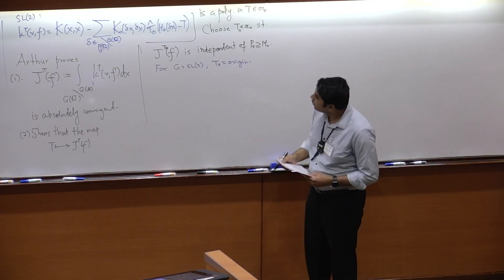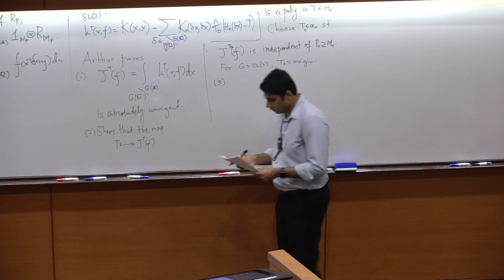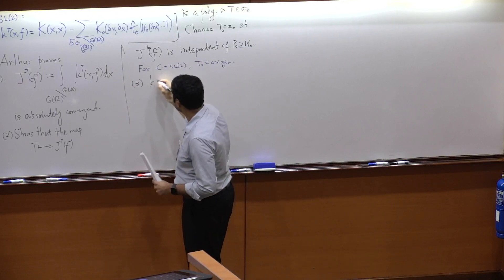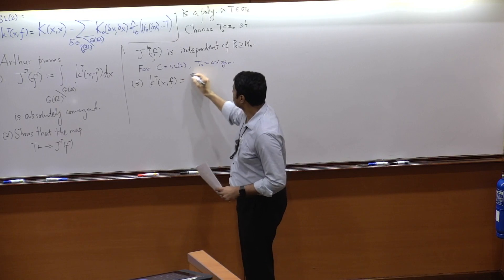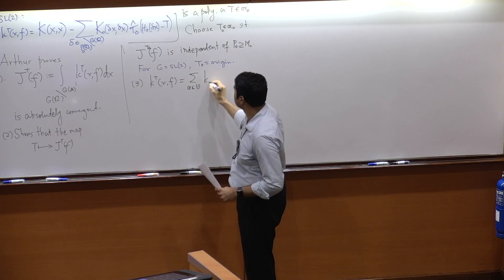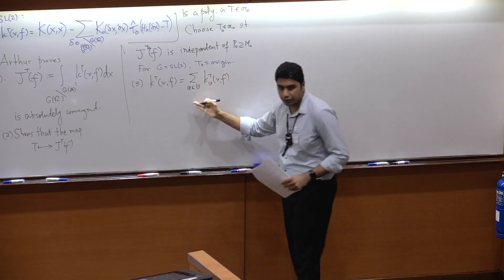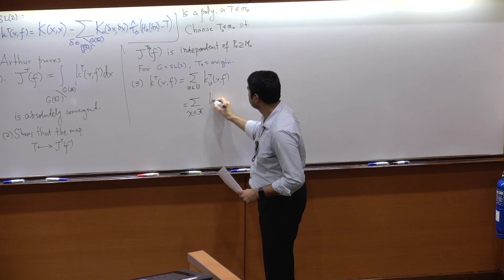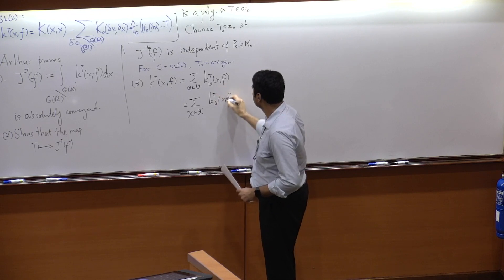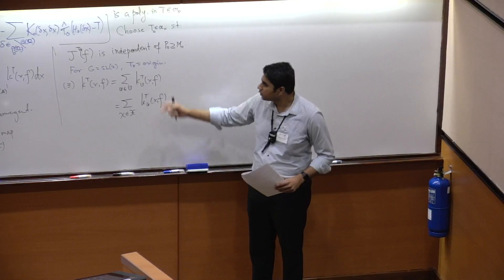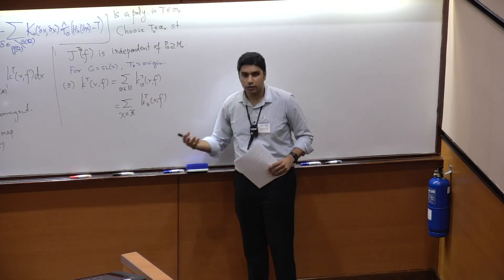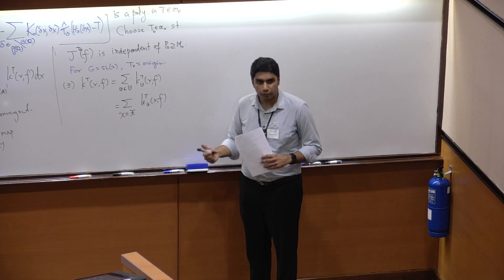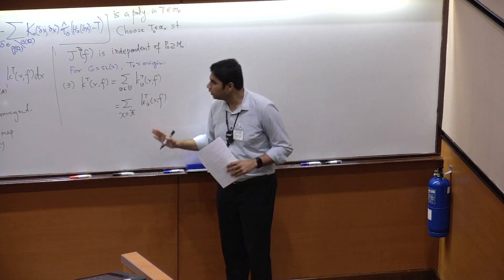The third property Arthur proves is that K_T(x, F) yields geometric and spectral expansions. The geometric side involves conjugacy classes — I will define these objects shortly, maybe in the next lecture. Such an expression is called the coarse expansion, and Arthur makes the terms more explicit when he develops the fine expansion from the coarse expansion. We will see that at least for SL₂.